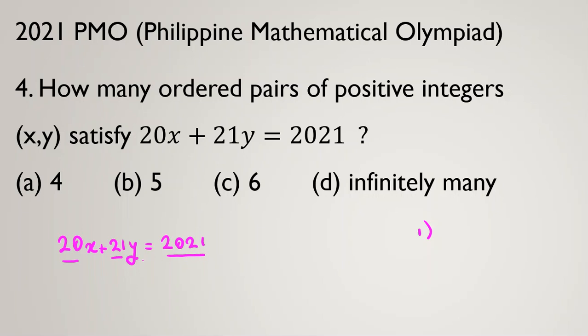The first step always is this. Here we say, okay, so GCD of 20 and 21 is 1 and it divides 2021. Let me tell you if it doesn't divide what happens.